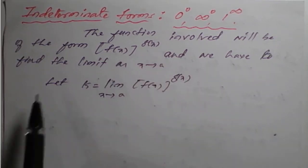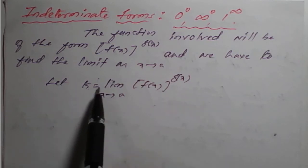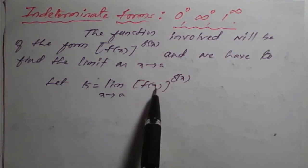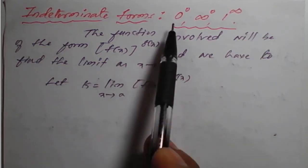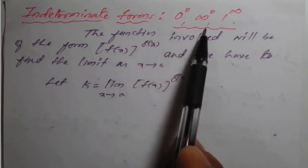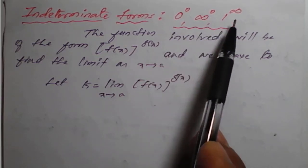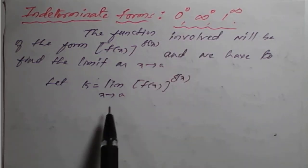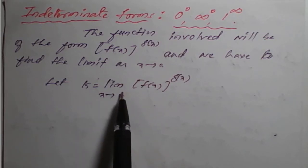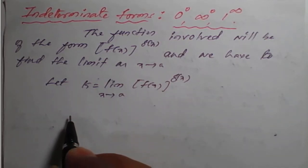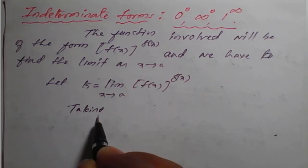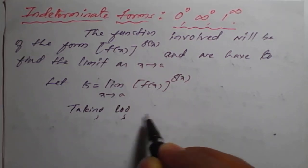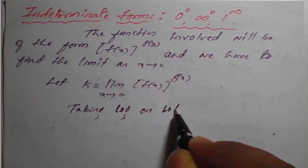So for this, let k equal limit of f(x) raise to g(x) as x tends to a. For such kind of functions, if it is 0 raise to 0 or infinity raise to 0 or 1 raise to infinity, then the given limit we have to consider as k equals, then taking log on both sides.